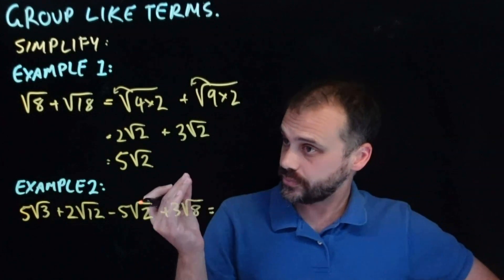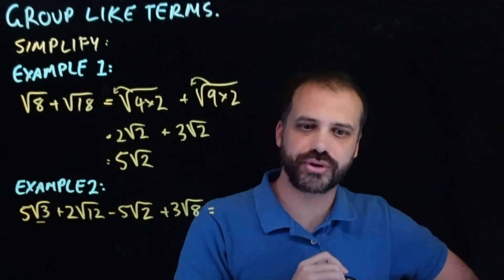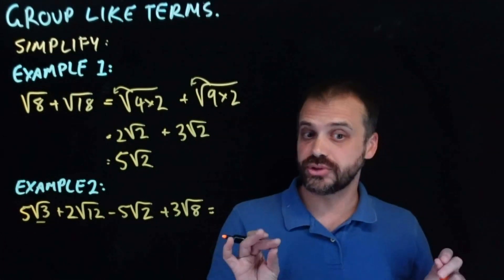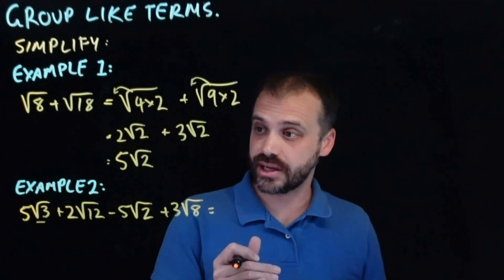All right, now again another example. Root 3, root 12, root 2, root 8. Four terms and none of them look the same. But they are the same, or at least some of them are the same. Let's have a look.